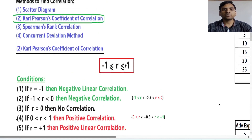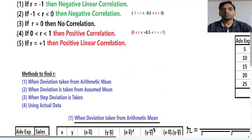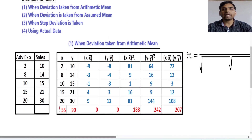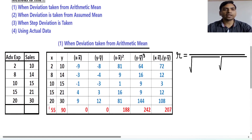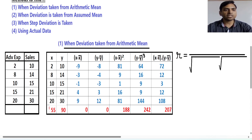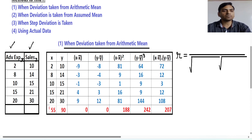So r lies between minus 1 to plus 1 and we have different methods to find r. The first method is when deviation is taken from the arithmetic mean. We have this dataset of advertisement and sales. We consider advertisement as the x variable and sales as the y variable. Now we need to find the relationship between sales and expenditure.